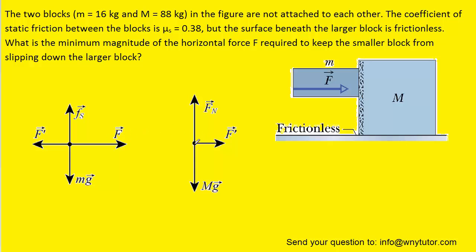For the free-body diagram of the larger block, we have only three forces: the downward gravitational force, the normal force of the ground pushing up on the larger mass, and the force of the smaller block pushing against the larger block. This force and the reaction force on the small block are equal in magnitude — they are an action-reaction pair. The smaller block pushes against the larger block, and the larger block pushes back with an equal but oppositely directed force.